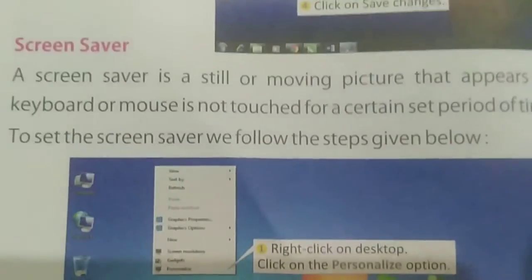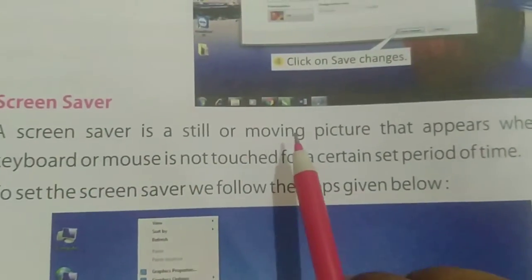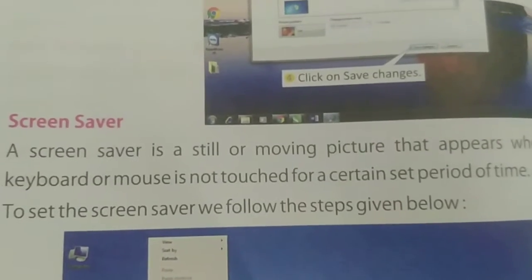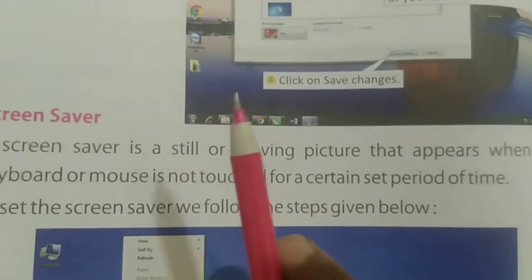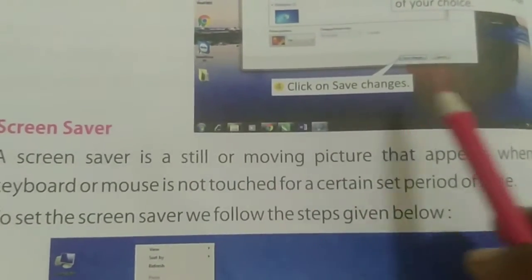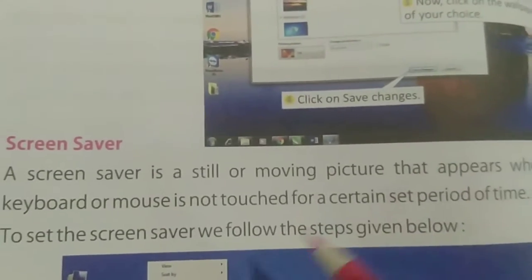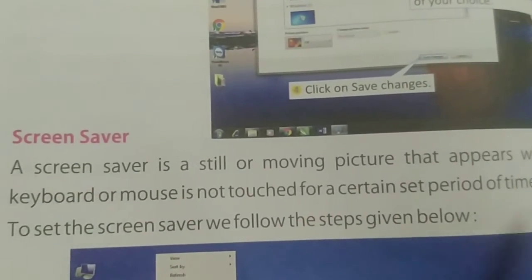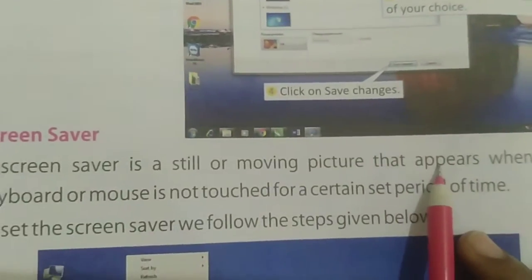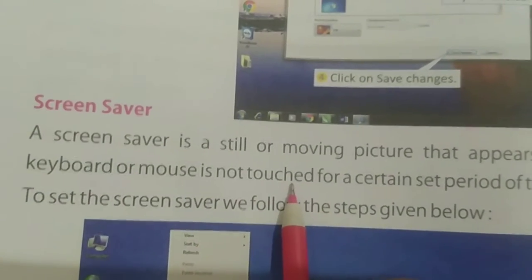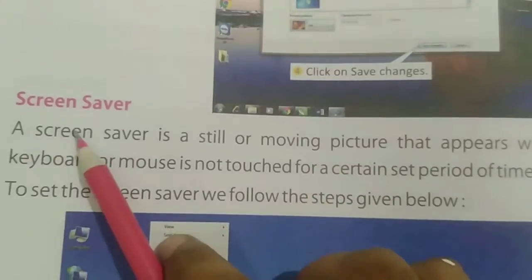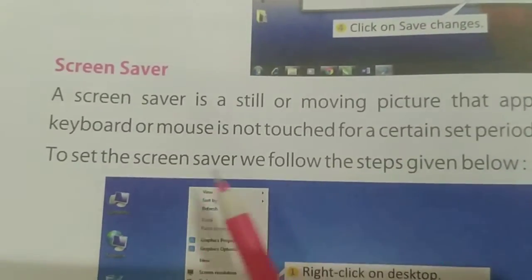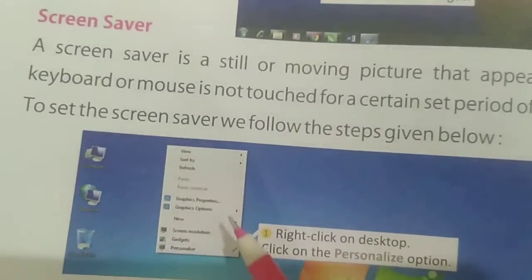Next is the screen saver. A screen saver is a still or moving picture that appears when the keyboard or mouse is not touched for a certain set period of time. For example, if someone calls you and you have to leave for half an hour, the screen saver will appear on screen. To set the screen saver, we follow the steps given below.